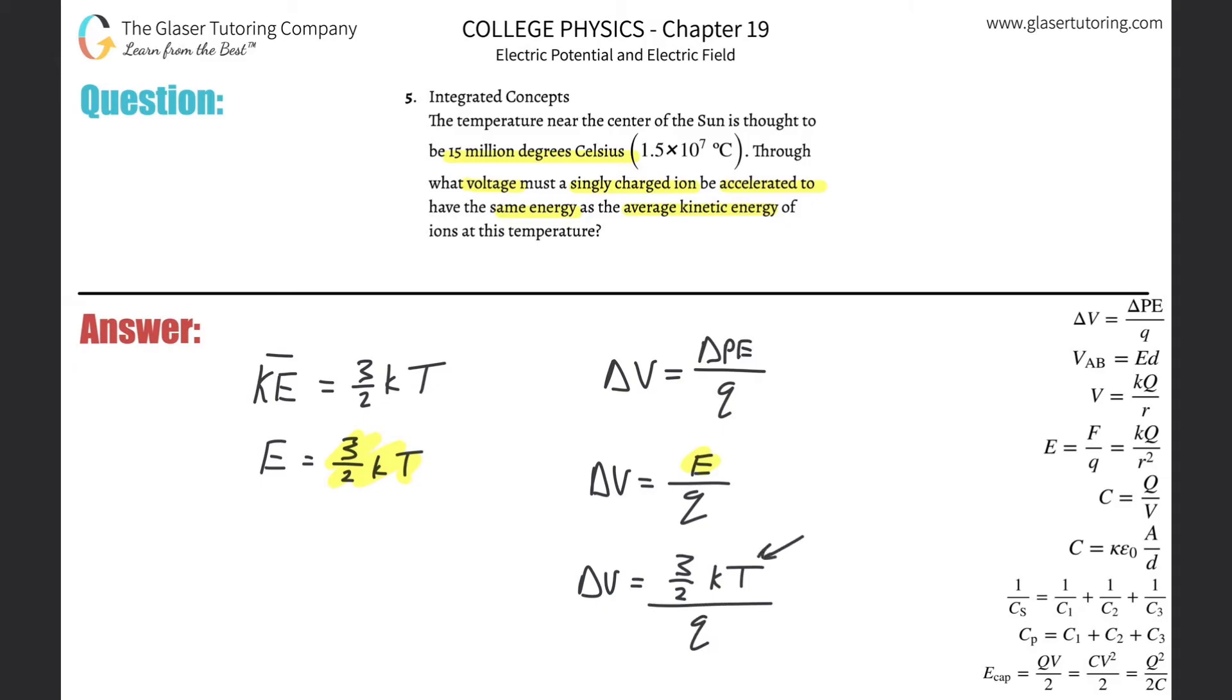Remember, temperature has to be in terms of Kelvin. They gave it to us in terms of Celsius. Wonderful. Just add 273 to it. Is it really going to do anything? No, but we're going to do it anyway. So this is basically now going to turn out to be the change in the voltage is going to be three halves times the Boltzmann constant, which is 1.38 times 10 to the minus 23 times then the temperature in Kelvin. So it's 1.5 times 10 to the 7th degrees Celsius, plus then 273. Not really going to change it, but whatever.